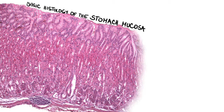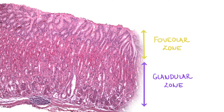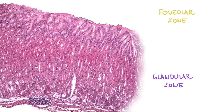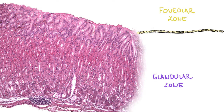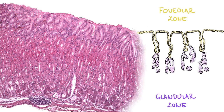The gastric mucosa consists of two zones: the upper foveolar zone and the lower glandular zone. Foveoli are covered by mucus-producing columnar epithelium and form numerous invaginations called gastric pits, which connect to stomach glands. Cellular composition of the glands varies according to locality.